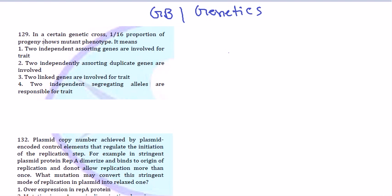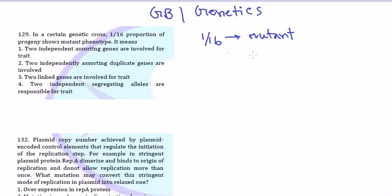The first question: in a certain genetic cross, one out of 16 proportion of progeny shows a mutant phenotype. That means if a normal genetic cross is conducted and there are 16 offspring, one of them is mutant — they have a mutation in their gene. The options are: (1) two independent assorting genes are involved, (2) two independently assorting duplicate genes are involved, (3) two linked genes are involved, (4) two independent segregating alleles are responsible.